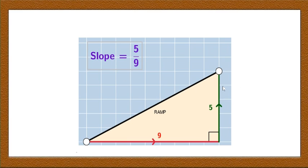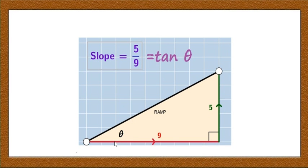You can apply the same idea to find the slope of a straight line. In the right-angle triangle formed by the ramp, if theta is the angle of inclination of the line with the horizontal, then opposite side divided by adjacent side equals tan theta. Here 5 is the opposite side and 9 is the adjacent side, so the slope equals tan theta, where theta is the angle of inclination of the line with the horizontal.